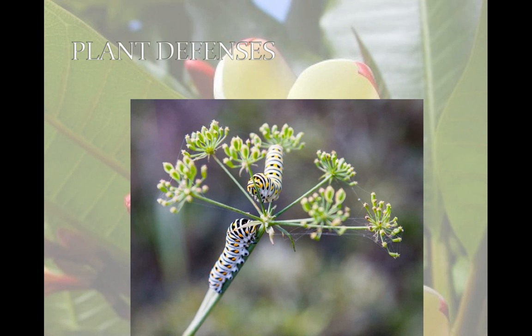Plants have various defenses: thorns, and chemicals that prevent the plant from being eaten. An example is canavanine, an amino acid similar to arginine. When an insect eats the plant, it uses canavanine instead of arginine to build proteins, and therefore the protein is abnormal, so the insect dies.